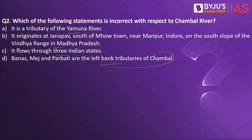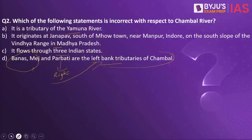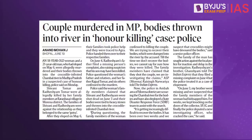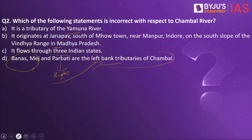That is because when you look into the last statement, yes, Banas and Mej happen to be the left bank tributaries, but when it comes to Parbati, it is not a left bank but a right bank tributary of Chambal. Which is why this particular statement is incorrect. This practice question was taken because an article on the Indian Express makes a reference to Chambal river. Chambal river is one of the tributaries of the Yamuna river, forming part of the drainage system of the Ganges, and flows through three Indian states.